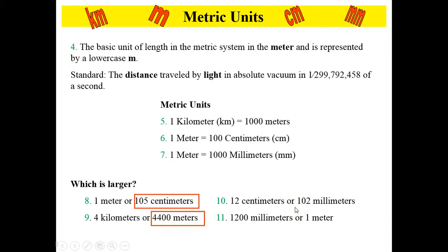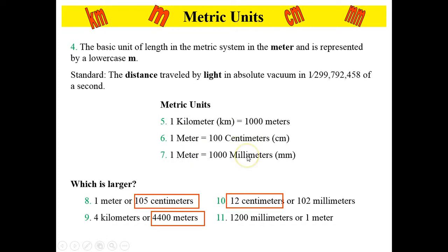Number 10: 12 centimeters or 102 millimeters? One meter is equal to 1,000 millimeters, and there are 10 millimeters in a centimeter. In this case, 12 centimeters is longer than 102 millimeters. Number 11: 1,200 millimeters or 1 meter? One meter has 1,000 millimeters, so 1,200 millimeters is longer.